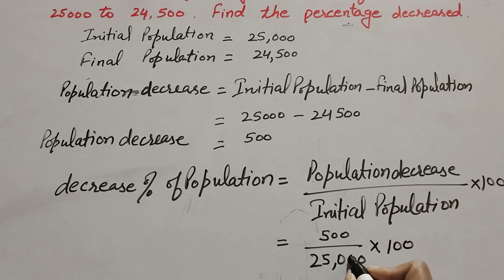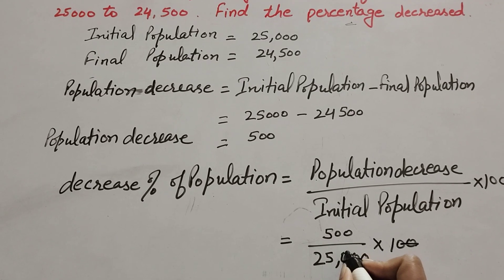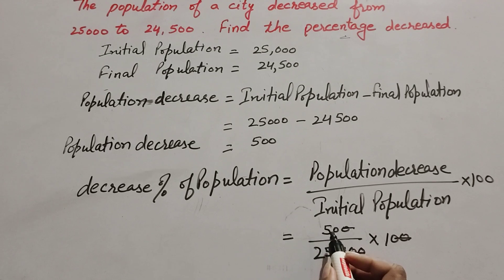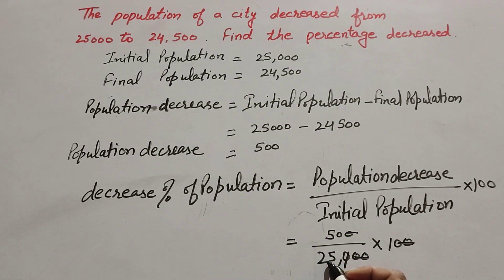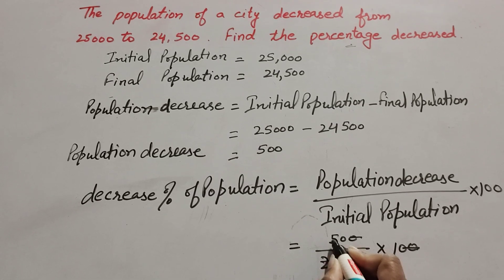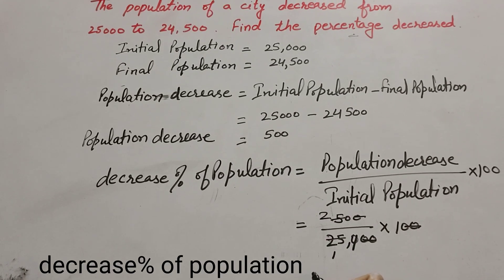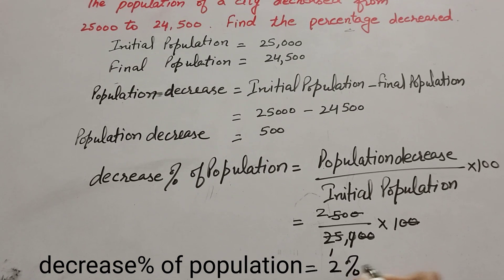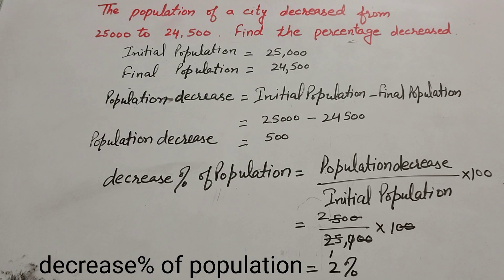Two zeros in the denominator and two zeros in the numerator cancel each other. So we get 50 divided by 25. Both are divisible by 25 — 25 ones are 25, 25 twos are 50 — so we get percentage decrease of population equal to 2%. Thanks for watching, like and share my video, and subscribe to my YouTube channel.